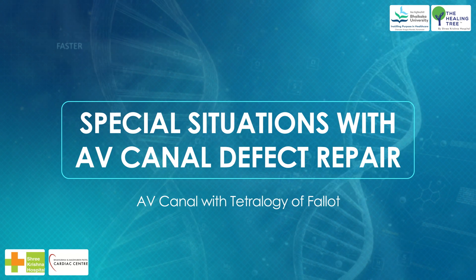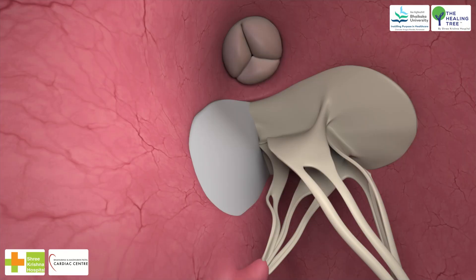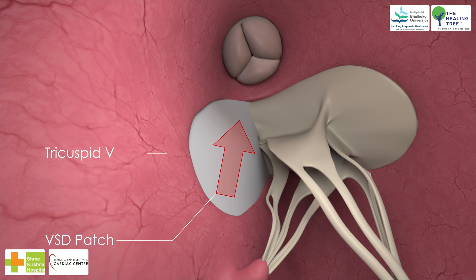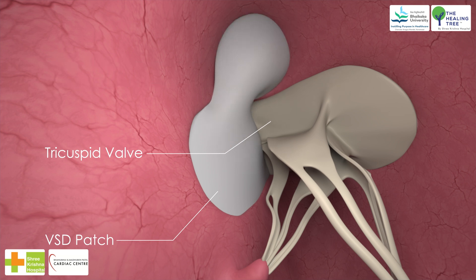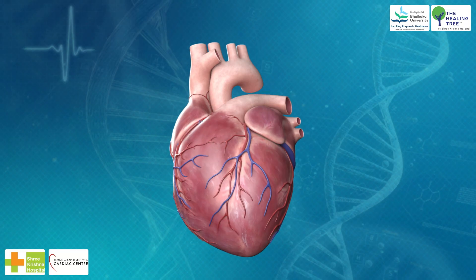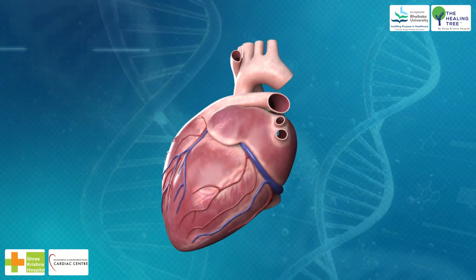Special situations with AV canal defect repair: (1) AV canal with tetralogy of Fallot — use a two-patch technique; the patch needs to be wider near the sub-aortic area to allow enough redundancy at the anterosuperior end of the VSD, thus avoiding left ventricular outflow tract obstruction. The VSD patch is comma-shaped with the two-patch technique. The most common conotruncal anomaly associated with AV canal defect is tetralogy of Fallot, encountered in approximately 6% of cases.